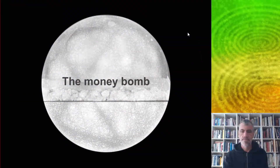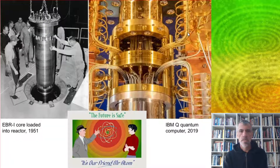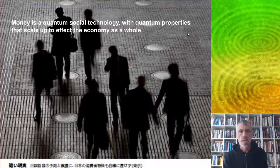In quantum economics, money plays a role rather like energy. What happens when we get an awful lot of energy together in the same place? In 1945, the Trinity test convincingly demonstrated that quantum forces do scale up. Since then we've learned to exploit the energy inside the atom in different ways, from peaceful nuclear reactors to more recently quantum computing. Money is a quantum social technology with quantum properties that also scale up to affect the economy as a whole.